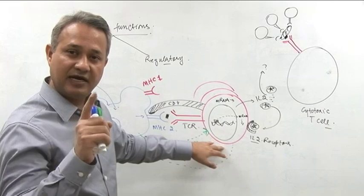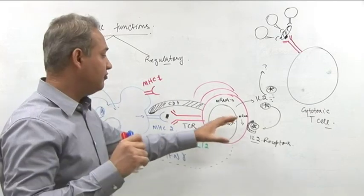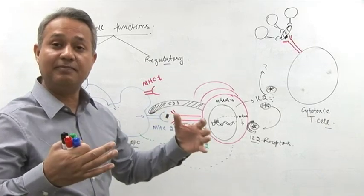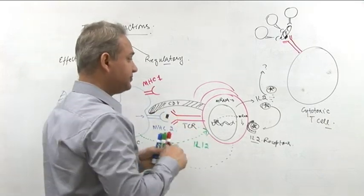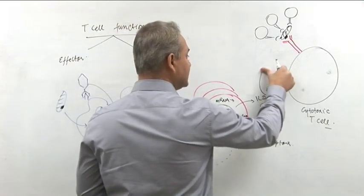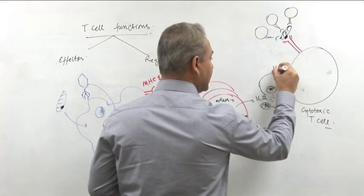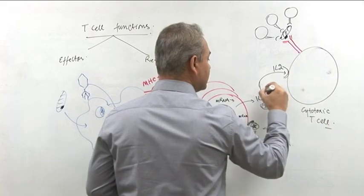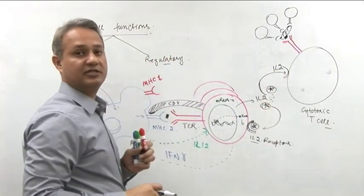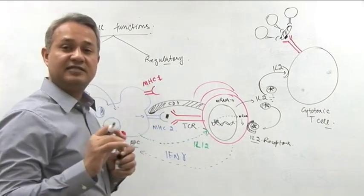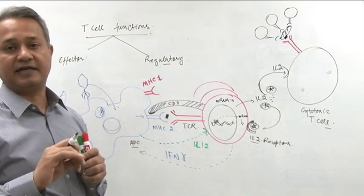So again, remember helper T cell, keep an eye on them. They are the one which are orchestrating this whole mechanism. They are the one which are helping with this mechanism. This IL-2 will be acting on the cytotoxic T cells. So when that acts on the cytotoxic T cell, the cytotoxic T cell will become active.